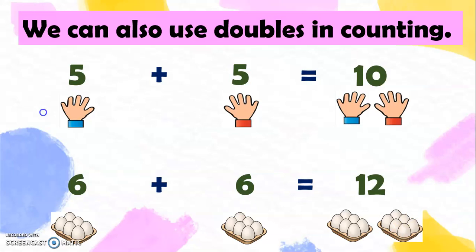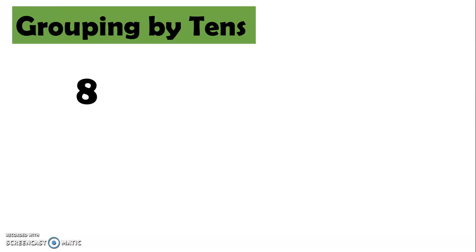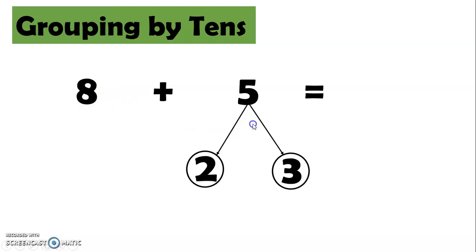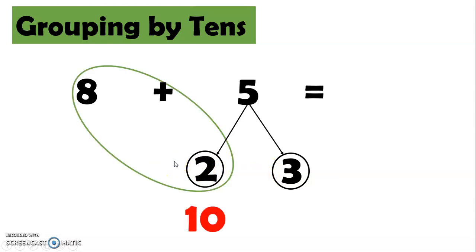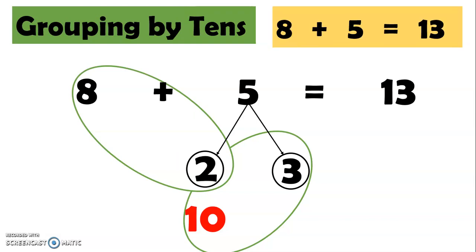Now let's try grouping by 10s. We have 8 plus 5. Let's look at the addend 5 and think of 2 numbers that will make the sum of 5, and one of the numbers that will also help 8 make the sum of 10. So we have 2 and 3 — 2 and 3 combined make 5. Now let's check: 8 and 2 together make the sum of 10. Now that we have 10, let us combine 10 and 3, and we get 13. So 8 plus 5 equals 13.